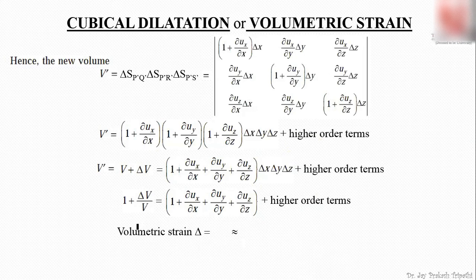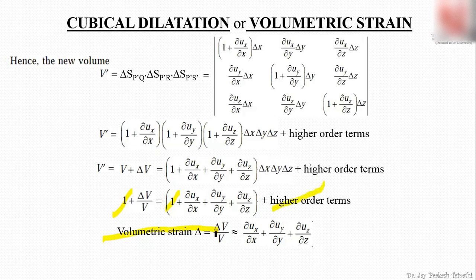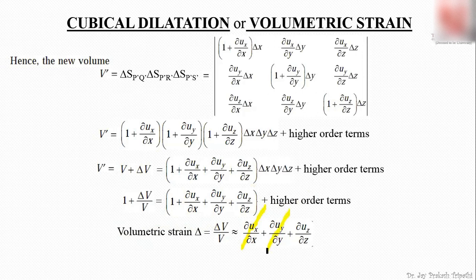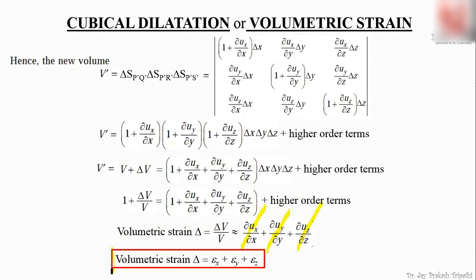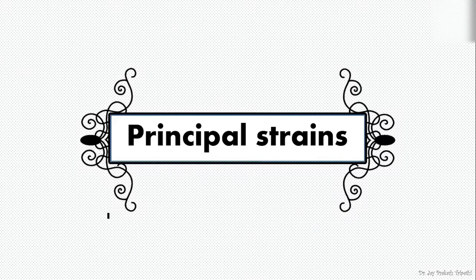Volumetric strain is equal to δV/V. Canceling the 1's and ignoring higher-order terms, we get δV/V ≈ summation of the three diagonal terms. Since ∂u_x/∂x represents ε_x, the next term represents ε_y, and the next ε_z, our volumetric strain equals ε_x + ε_y + ε_z. Our next topic is principal strain.